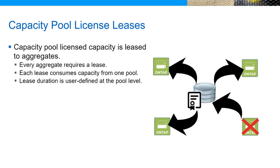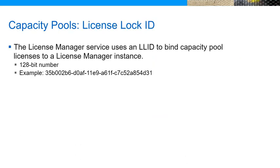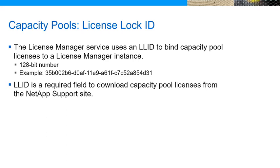From the license manager perspective, a lease expiration means that capacity is available to be used elsewhere. The purpose of the lease is to track the allocated capacity across the pool and to prevent capacity leakage. Capacity leakage happens when capacity has been leased but is never returned to the pool. Leases automatically renew as long as the node has connectivity with deploy. The nodes periodically run the lease renewal process, which requires no user interaction. Each license manager instance is identified with a unique 128-bit LLID.